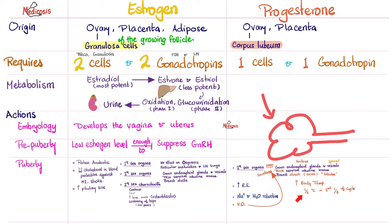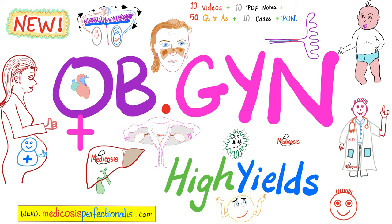Progesterone raises the body temperature half a degree in the second half of the menstrual cycle. It is also a significant vasodilator, which is why blood pressure should decrease slightly during normal pregnancy. It causes the increased respiratory rate seen during pregnancy. Progesterone inhibits uterine contractions, increasing the sustainability of pregnancy. The opposite is prostaglandins, which contract the uterus and ripen the cervix — they do not sustain pregnancy; they can terminate it.